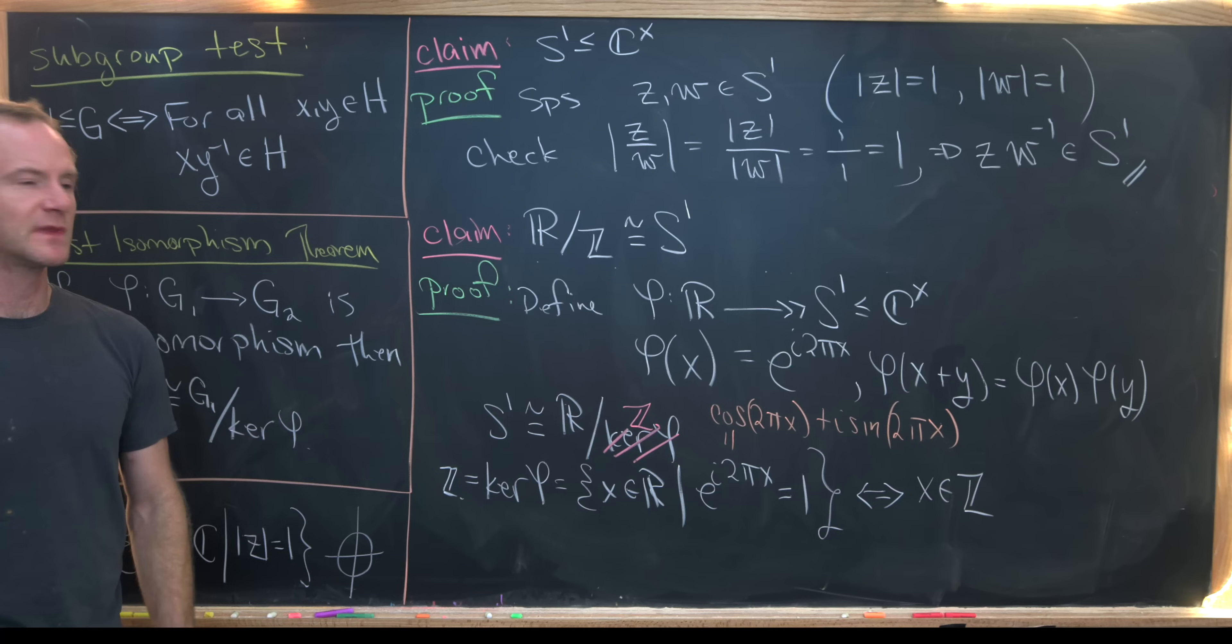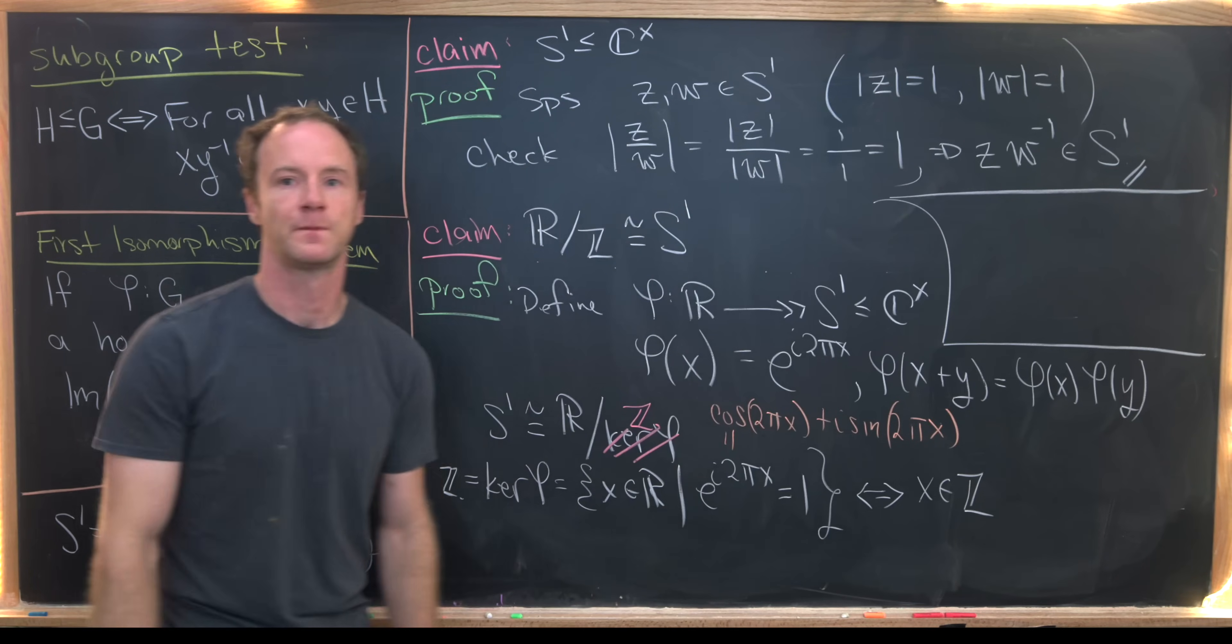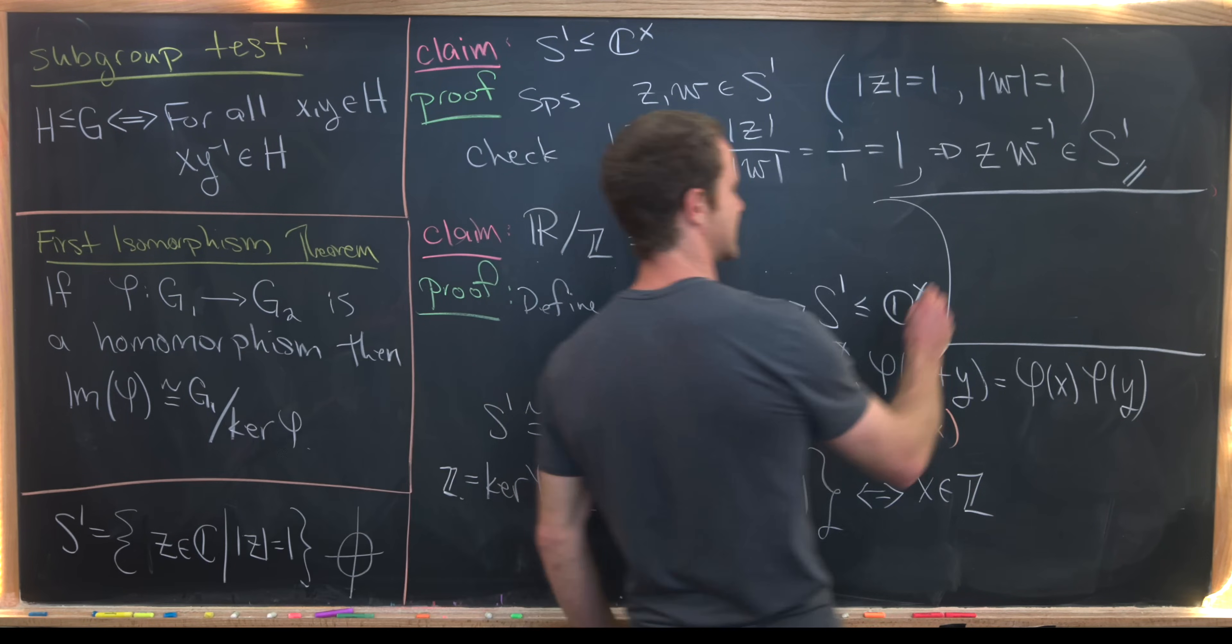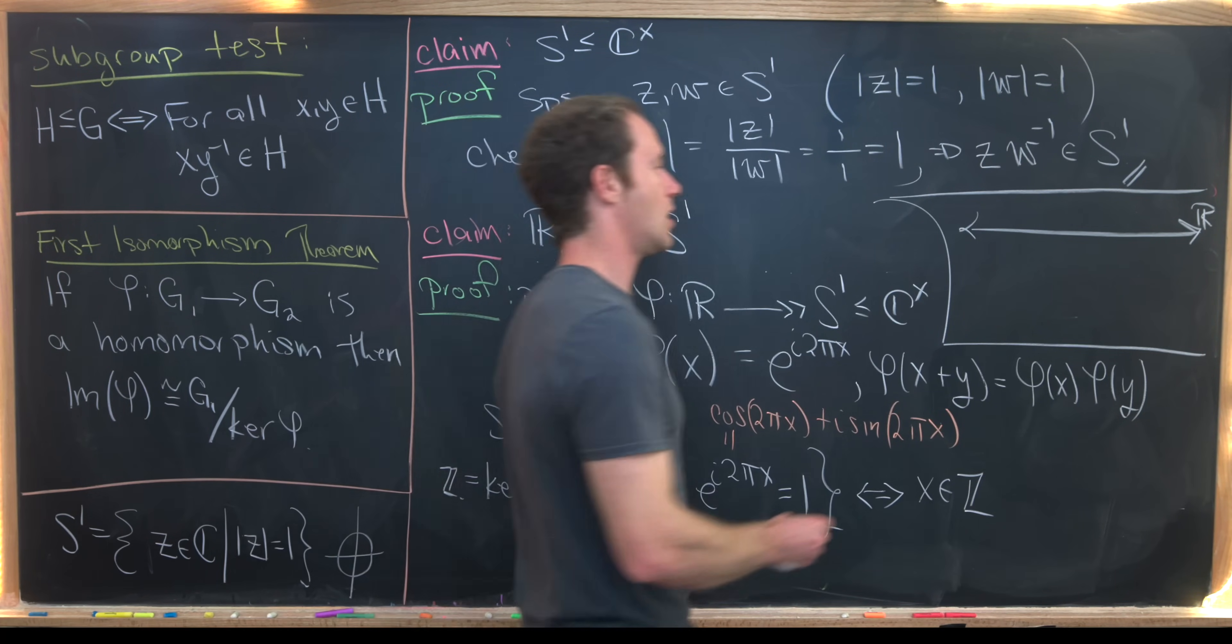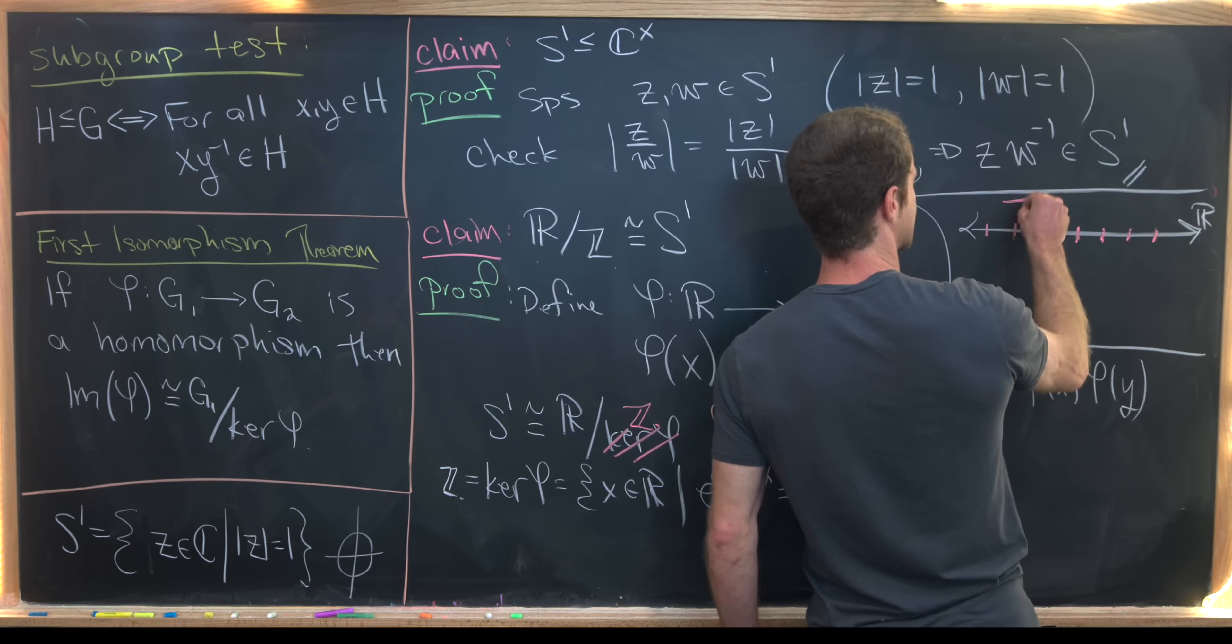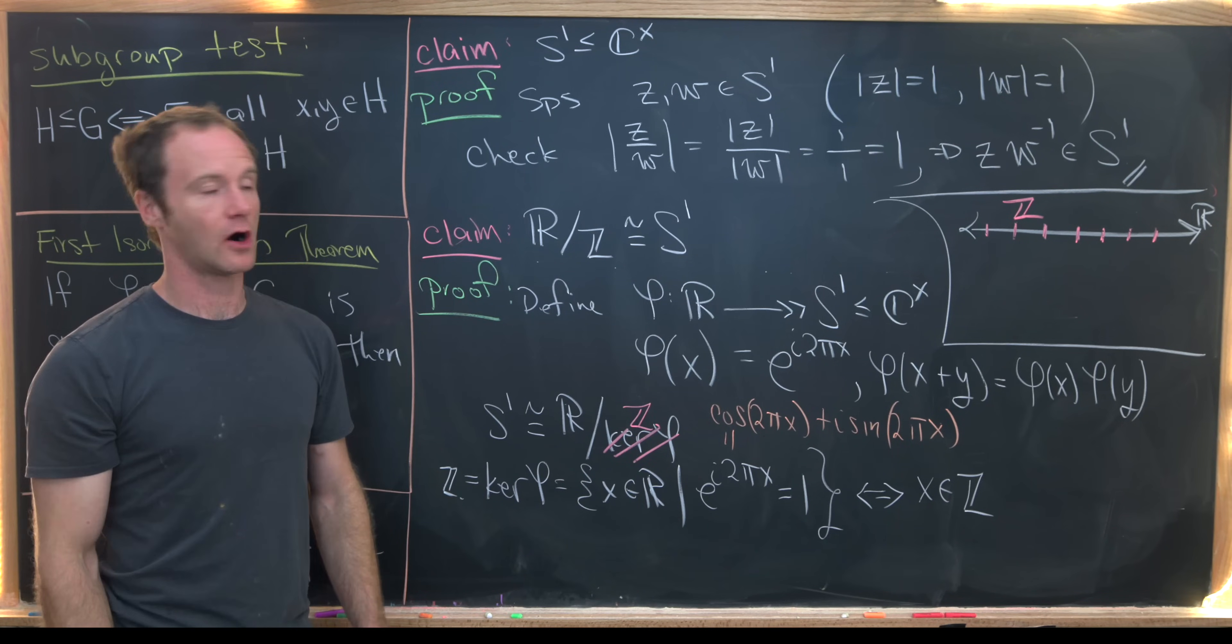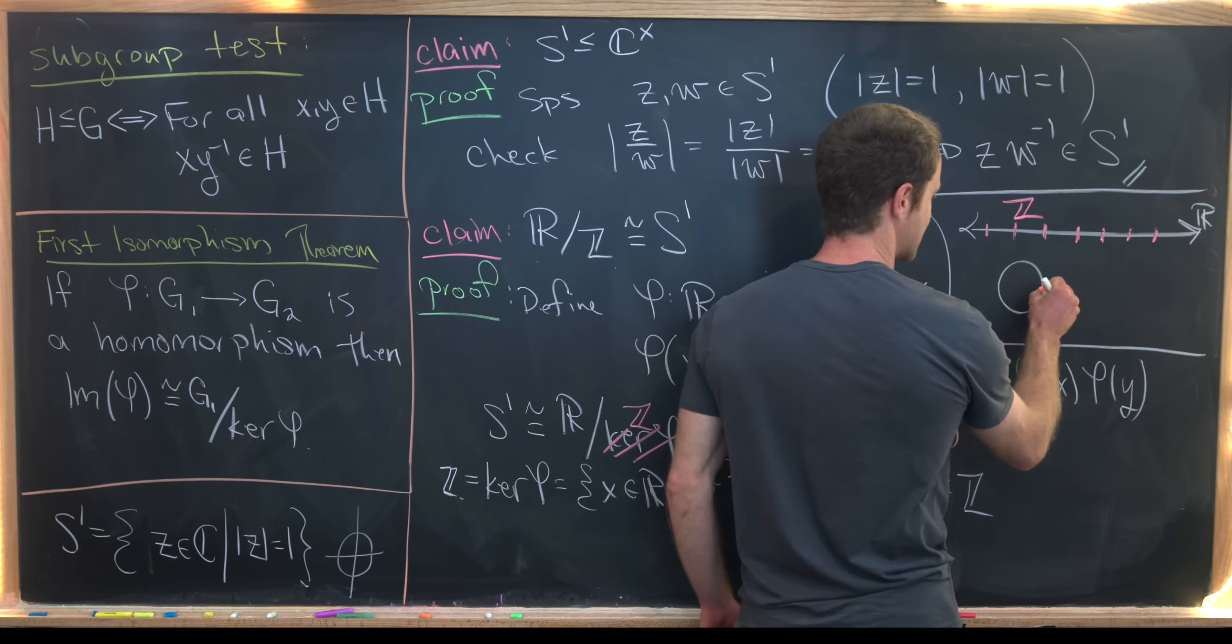So before we move on to our next example, I want to think about this geometrically as well. This notion of taking R and modding out by Z, it's like setting all of the integers equal to each other. So we can think about this as being our real line, and then all of these pink things are the integers. So obviously those are discrete parts of the real line. Well, this action of modding out by Z is like identifying all of those pink hatches, which wraps that real line into a circle infinitely many times.